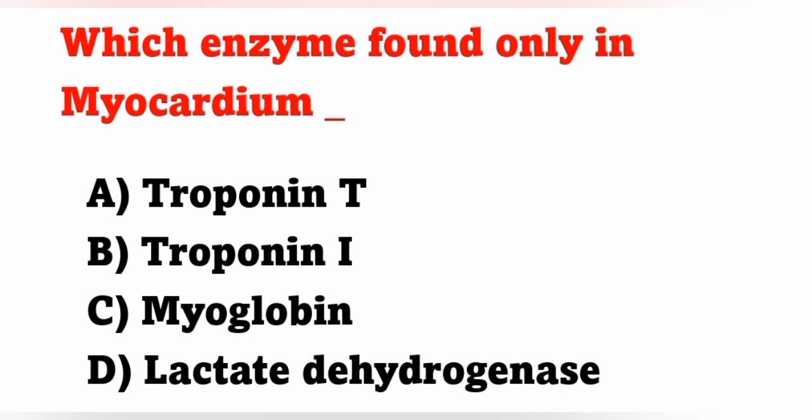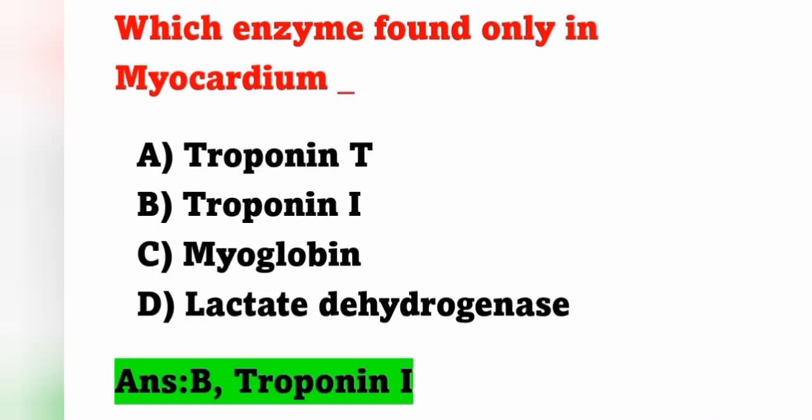Next question: which enzyme is found only in the myocardium? Options: A) Troponin T, B) Troponin I, C) Myoglobin, D) Lactate dehydrogenase. The enzyme found only in the myocardium is Troponin I. Option B is the correct answer.